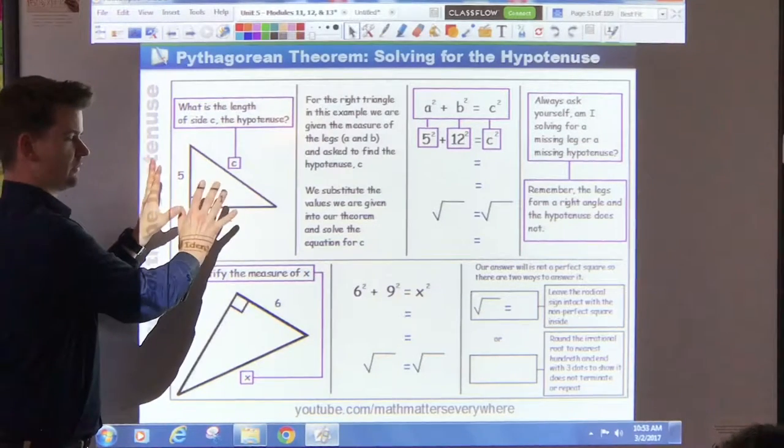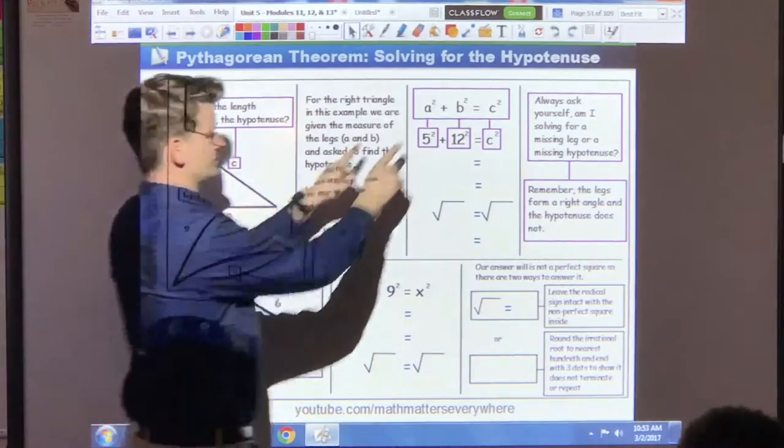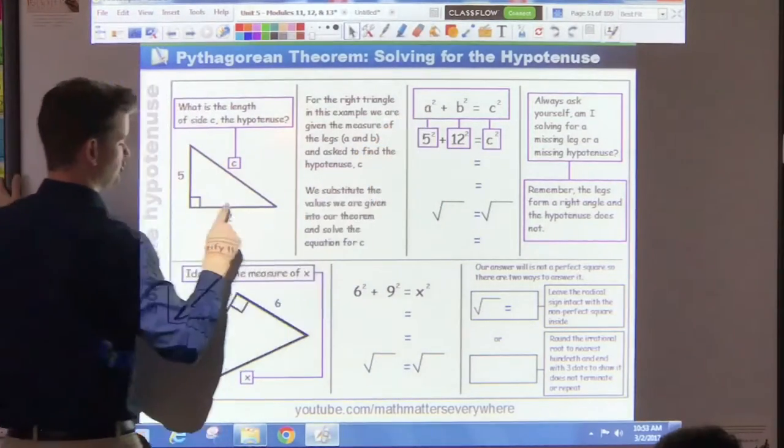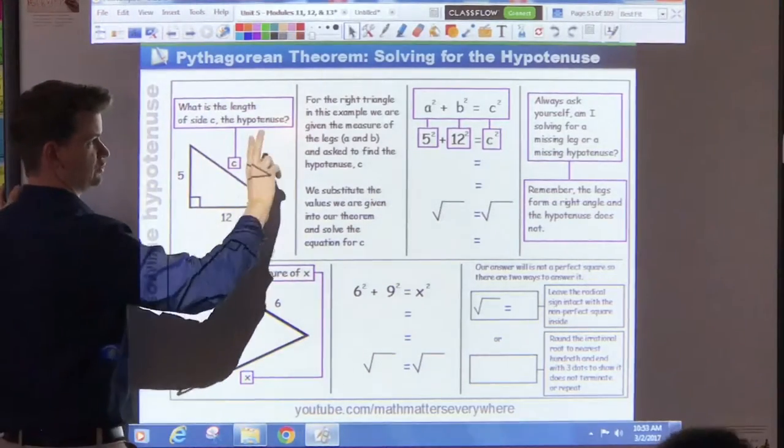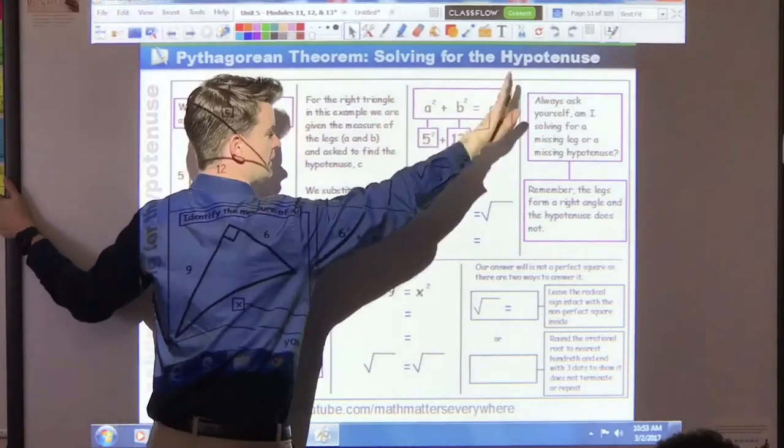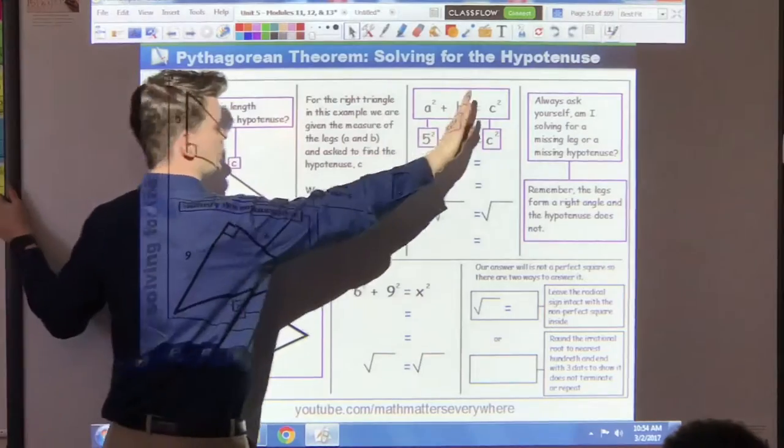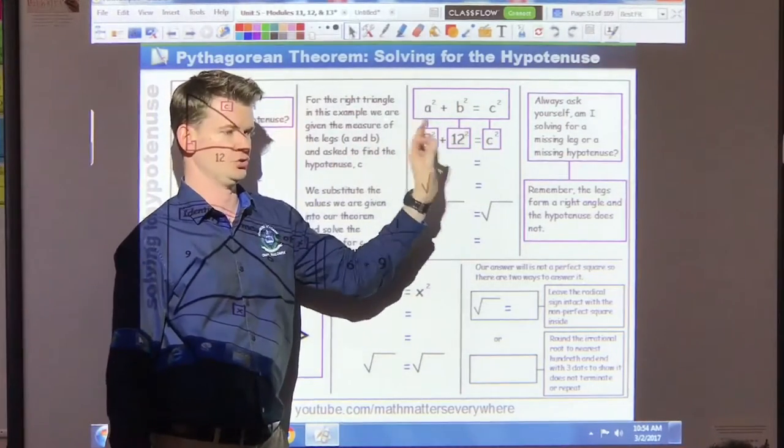This leg measures 12 units. So what we do is we take what we know, A and B, these are legs, it doesn't really matter which way you order them, and we substitute them in the theorem. So 5 goes in for A, 12 goes in for B. Notice, it doesn't matter which way you do this. It doesn't matter if you do 12 and 5, 5 and 12, as long as the legs are on the left side, hypotenuse is on the right side.